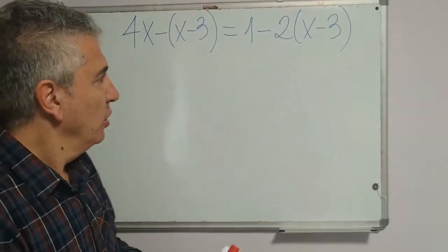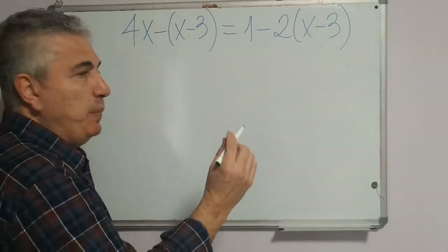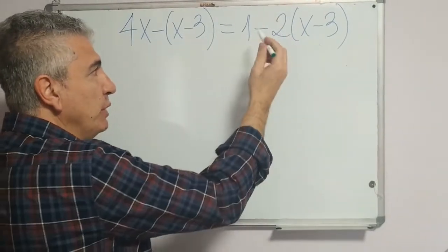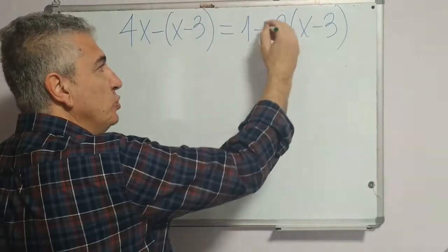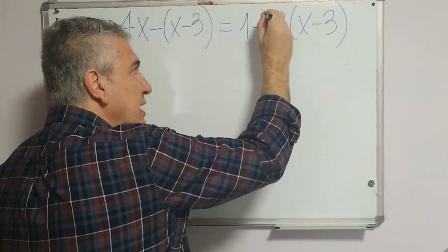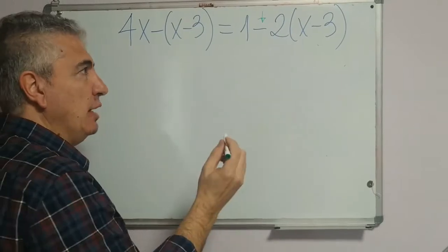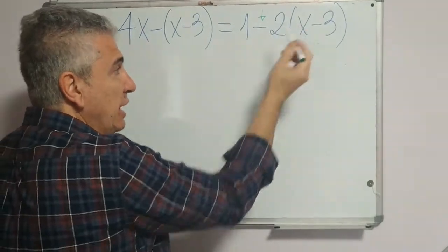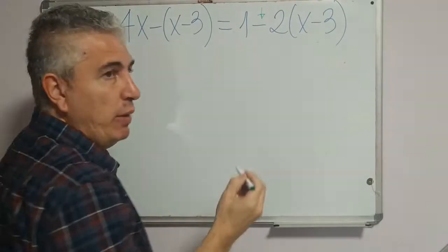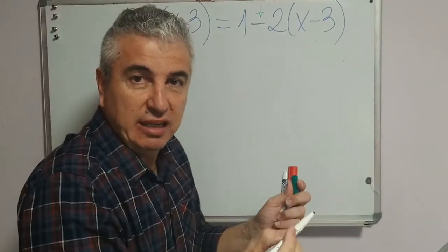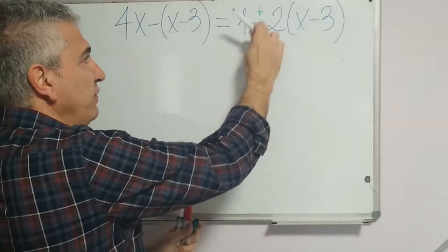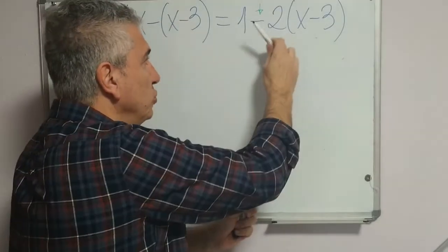When you multiply negative 2 times the bracket, you have to remember there is a negative here. So you say negative 2 times x gives negative 2x, and negative 2 times minus 3 gives positive 6 — because negative times negative is positive: 2 times 3 is 6.